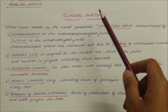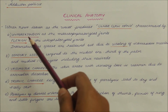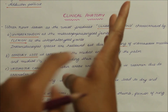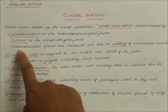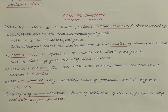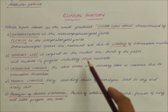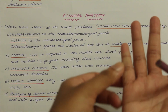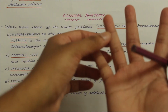Now let's look at the clinical anatomy of the ulnar nerve. A ulnar nerve lesion at the wrist produces the ulnar claw hand, which is characterized by hyperextension at the metacarpophalangeal joints and flexion at the interphalangeal joints. The intermetacarpal spaces are hollowed out due to wasting of the interossei muscles. The sensory loss is confined to the medial one-third of the palm and the medial one and a half fingers — that is the little finger and half of the ring finger — including their nail beds.